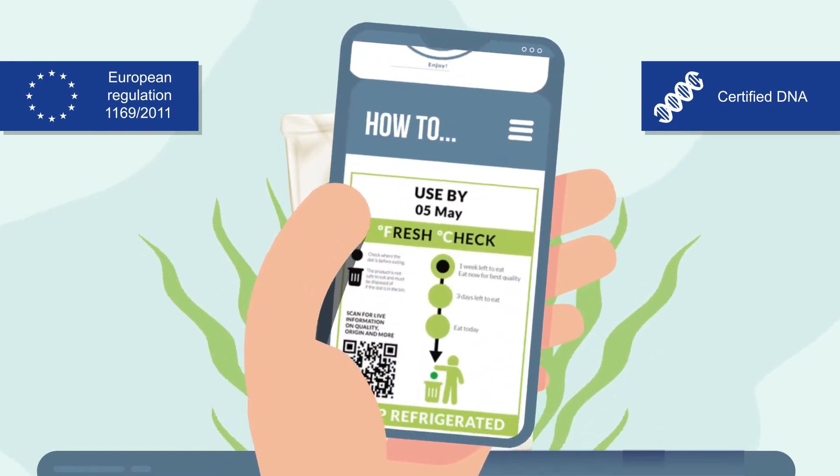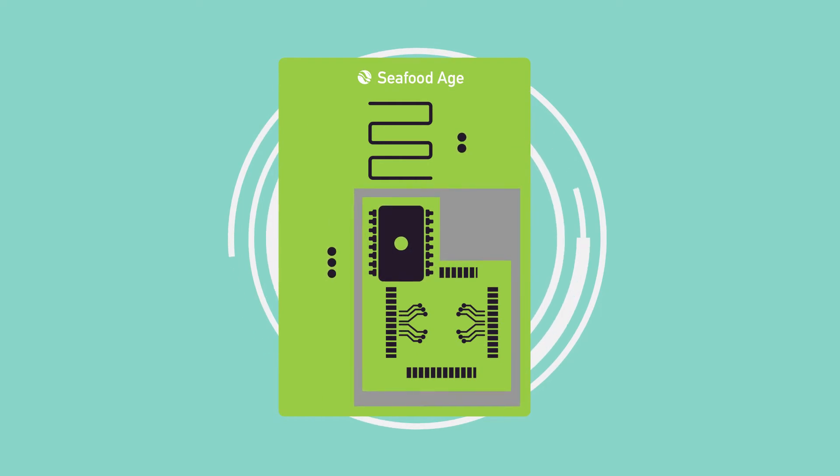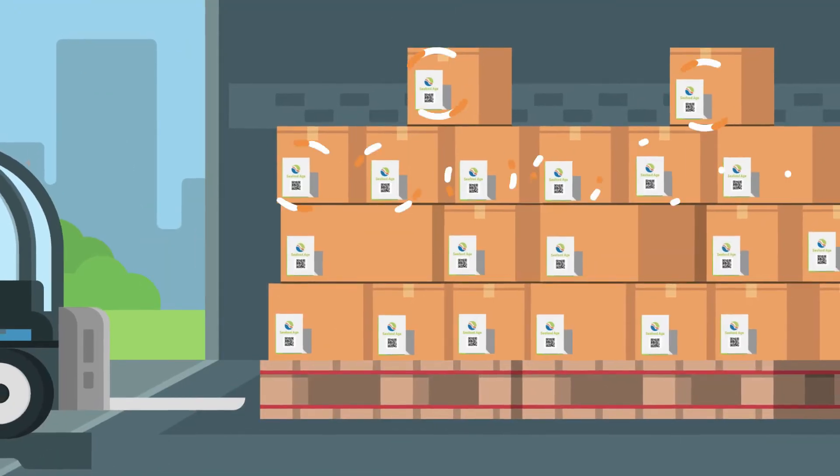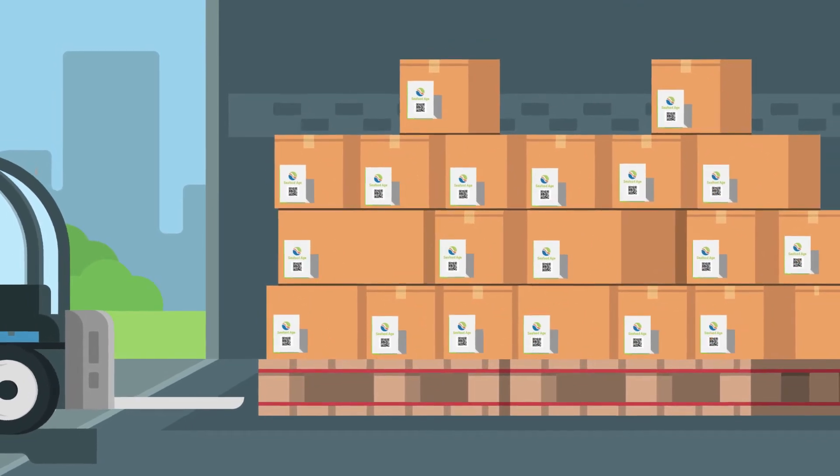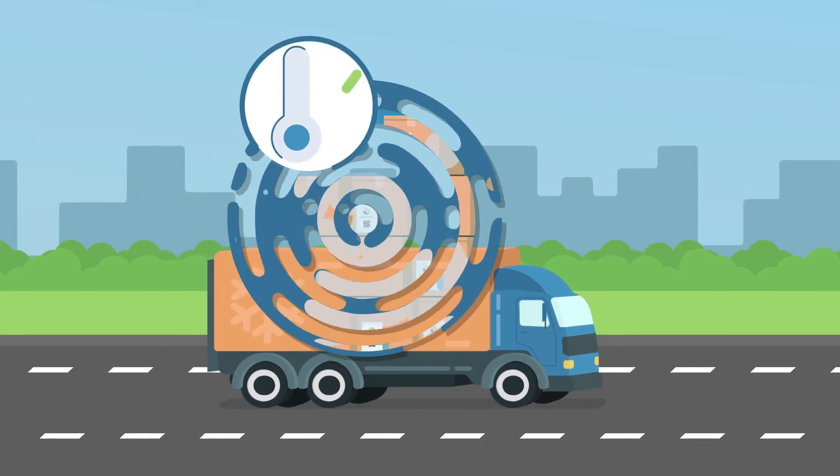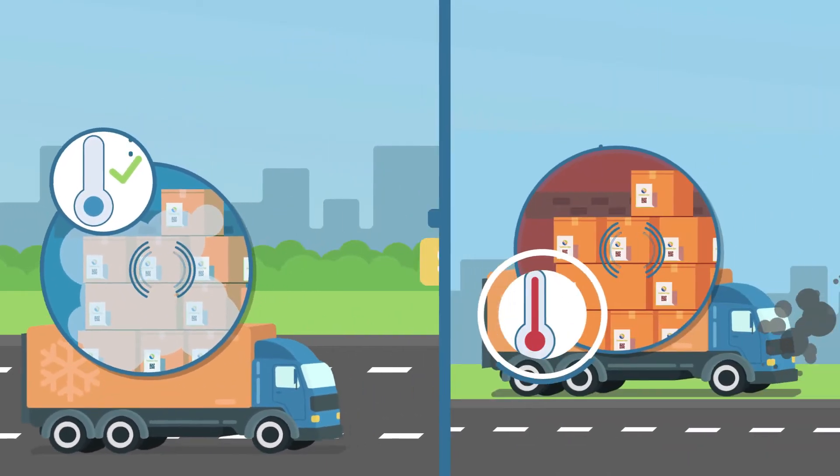To ensure the cold chain, we have developed a smart predictive label placed on every batch of RTE seafood product. This smart label regularly tracks temperature from the producer to the retailer throughout the distribution chain and sends the data to the cloud.